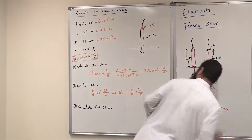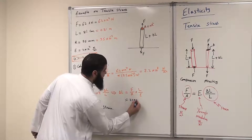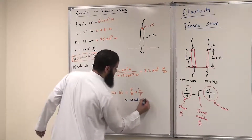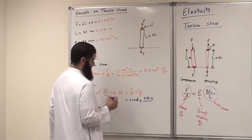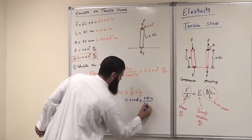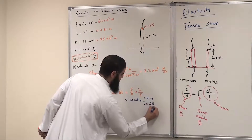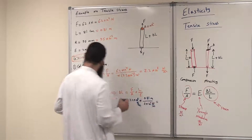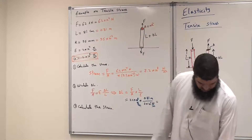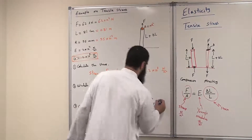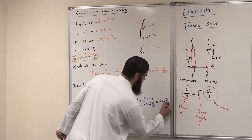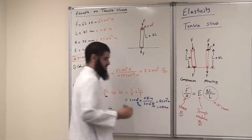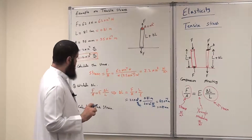Plugging in the numbers: ΔL = 2.2×10⁸ × 0.81 m, divided by E = 2×10¹¹ N/m². The N/m² units cancel, leaving ΔL in meters. The result is 8.9×10⁻⁴ meters, or written in millimeters, 0.89 mm. This is the increase in length of our steel rod.